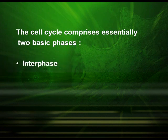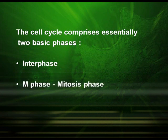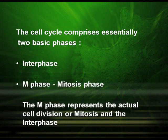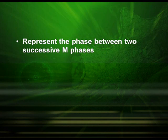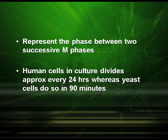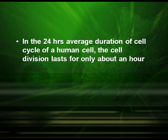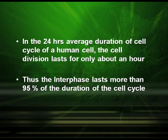The two phases are: one, interphase, and two, the M phase, also called the mitosis phase. The M phase represents the actual cell division or mitosis, and the interphase represents the phase between two successive M phases. Human cells in culture divide approximately every 24 hours, whereas yeast cells do so in 90 minutes. In the 24-hour average duration of the cell cycle of a human cell, cell division lasts for only about an hour. Thus, the interphase lasts more than 95 percent of the duration of the cell cycle.